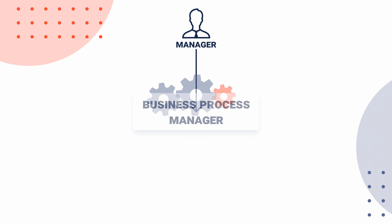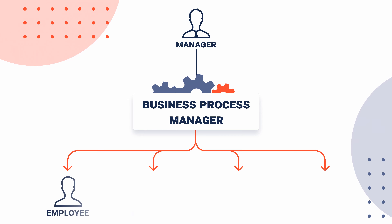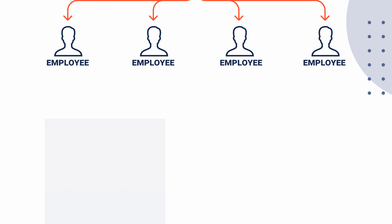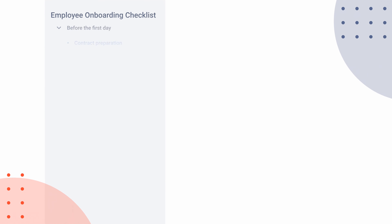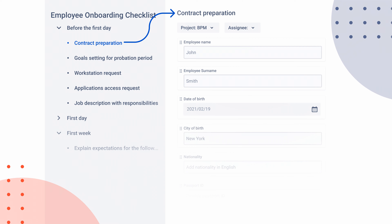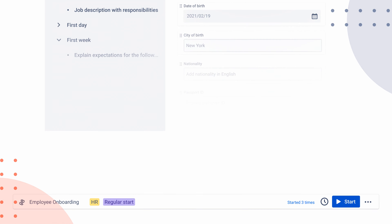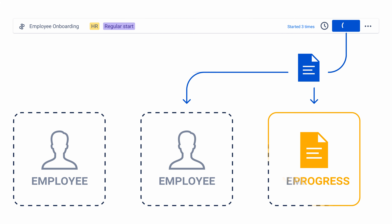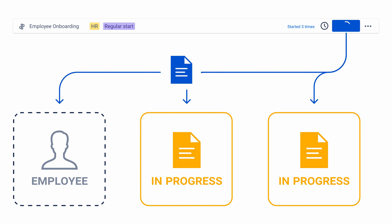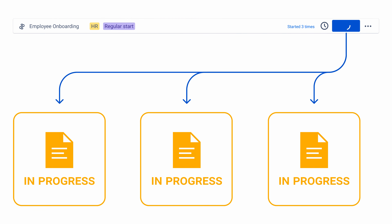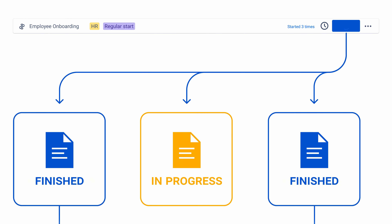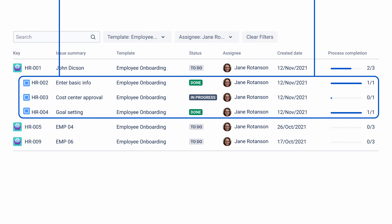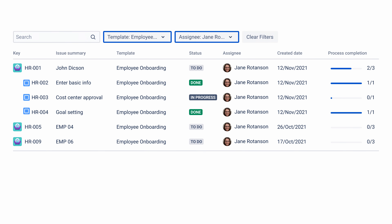How does it work? Create process templates for all repetitive workflows and focus on what's really important. The template includes steps with custom forms, project, and assignee. Start the process to automatically create new Jira issues with forms and checklists to submit by a required person. No important task will be missed. Monitor your progress and keep it up to date.